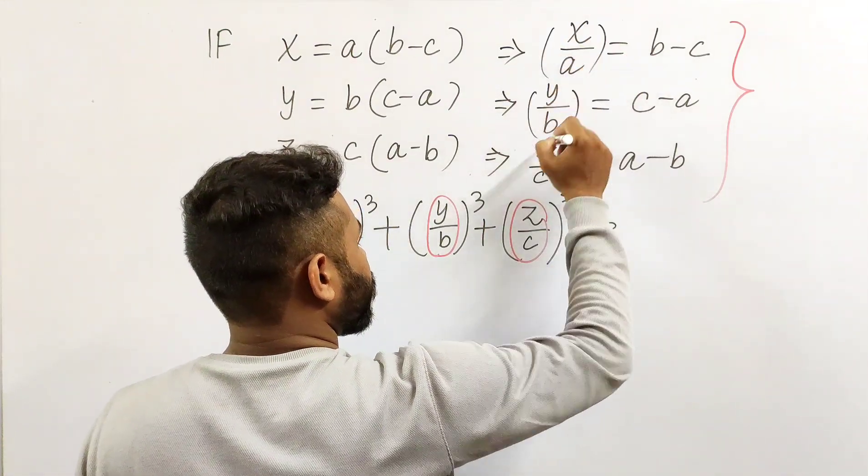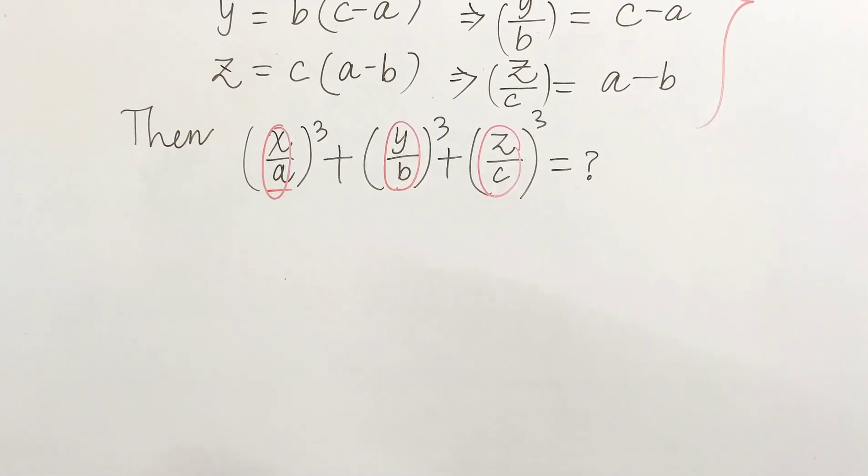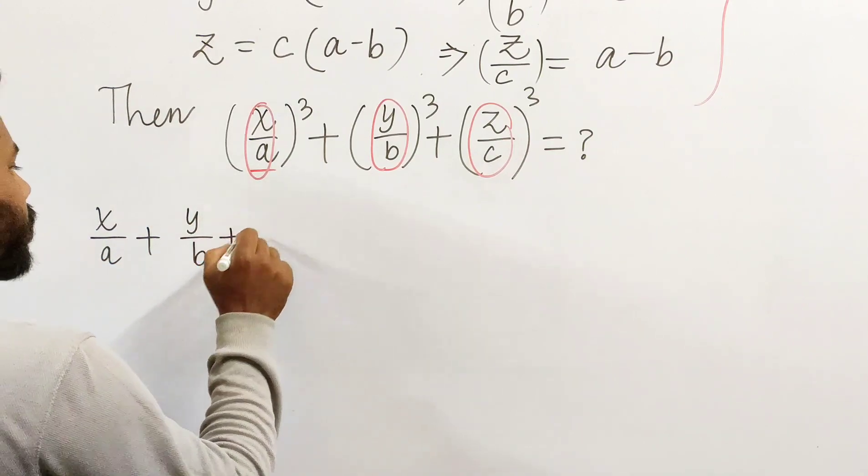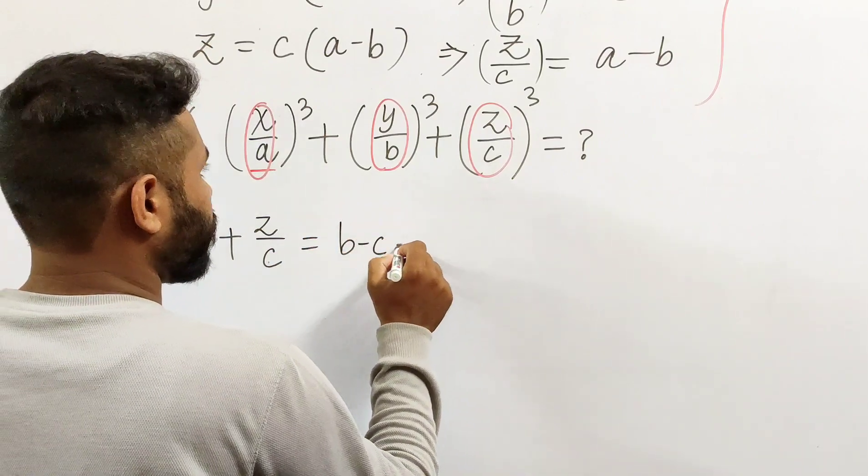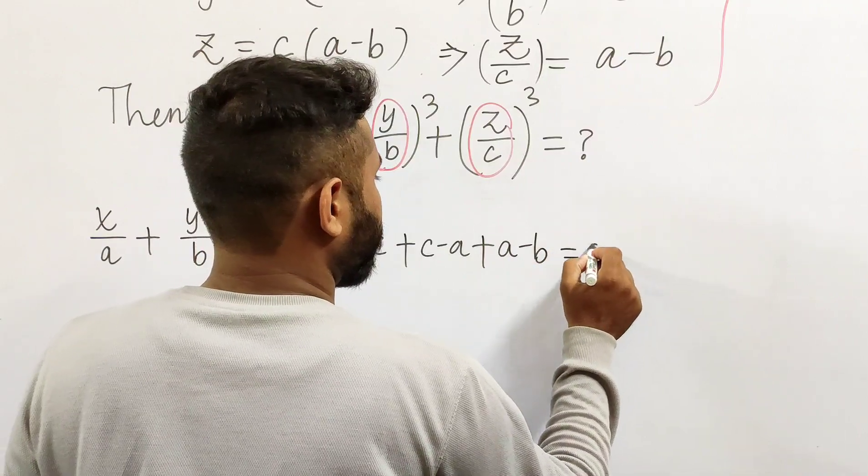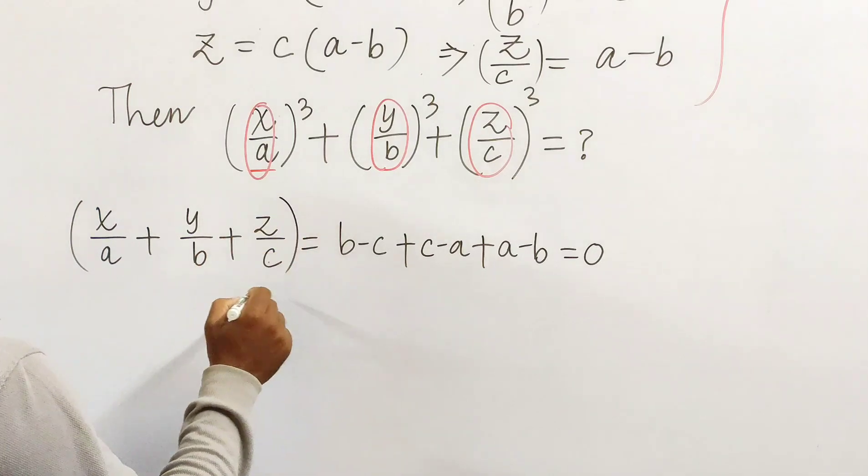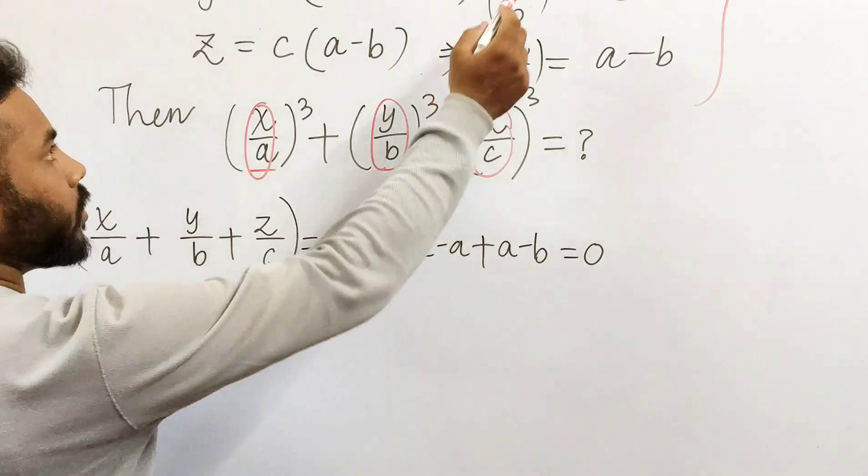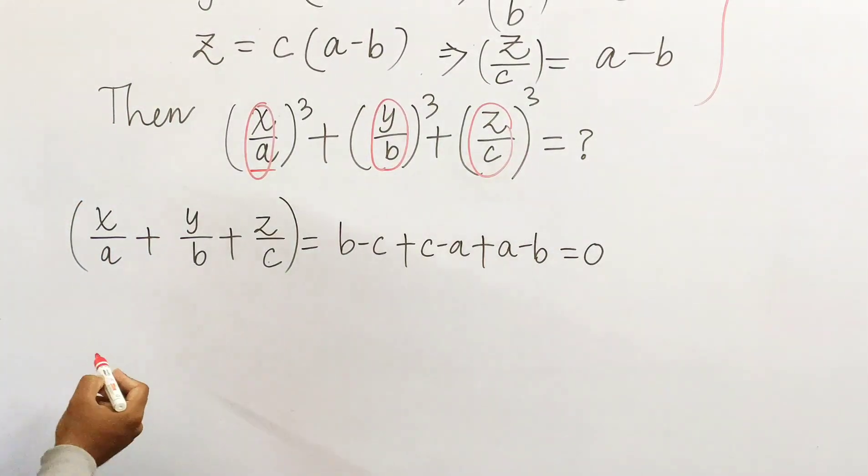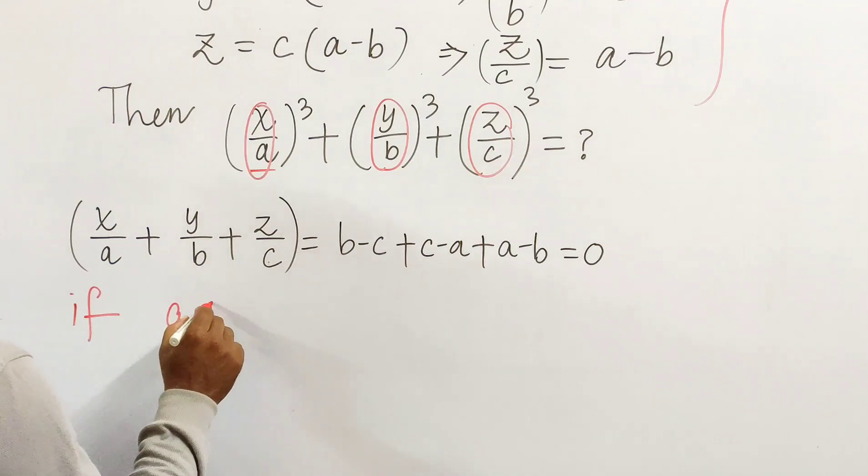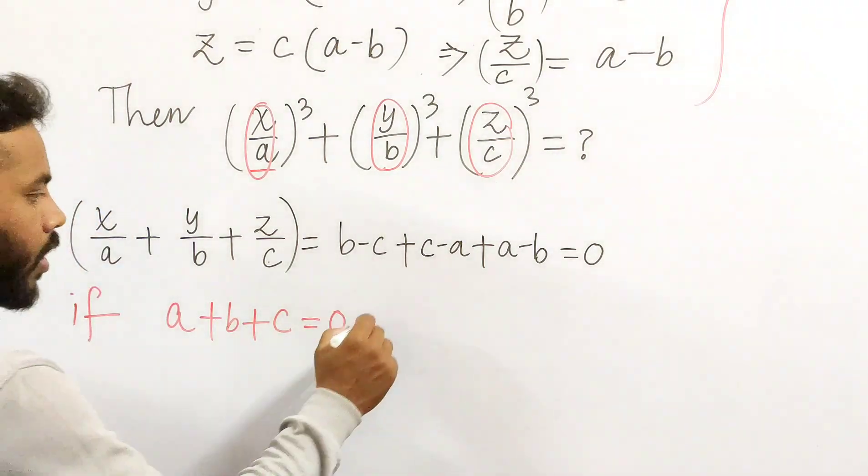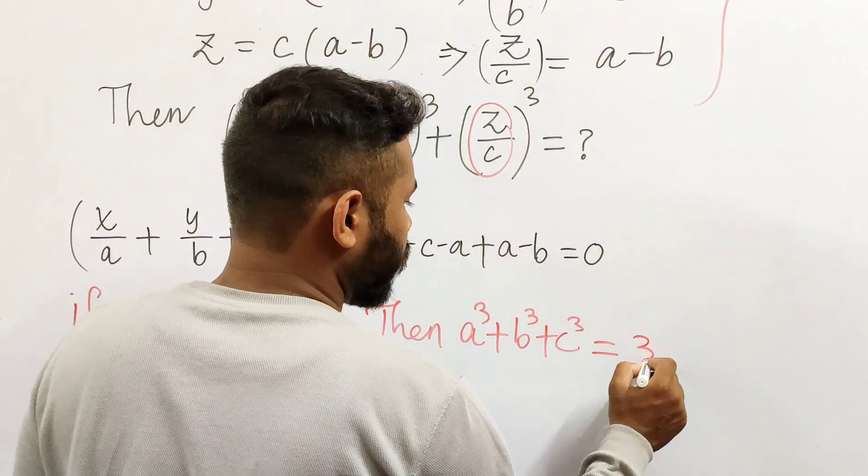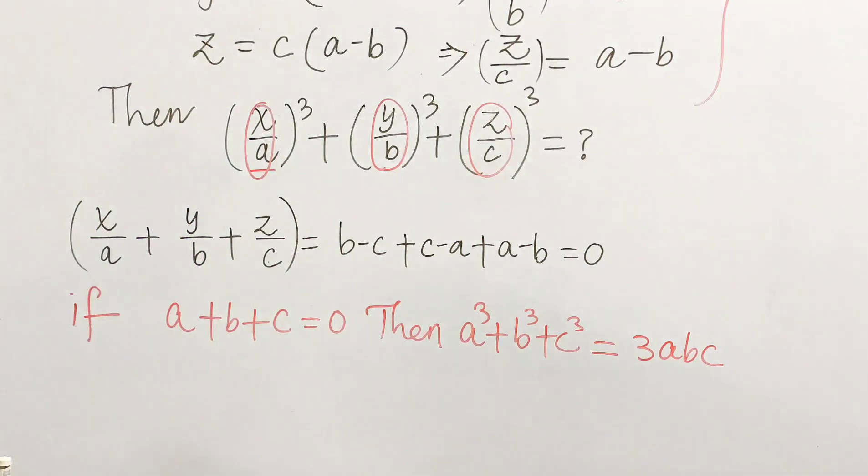Okay, so you see this addition of these three expressions gives us zero. And if you remember, we have a formula that says if a plus b plus c is zero, then a cubed plus b cubed plus c cubed equals 3abc. This is the basic algebra formula most of you know, and we are going to use this.